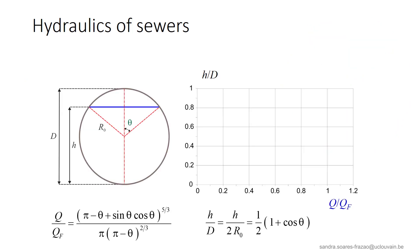We will therefore use a non-dimensional representation of this h-Q relation by representing the ratio Q over Qf as a function of the ratio h over D. Both ratios are a function of theta, so the relationship between h over D and Q over Qf may be constructed from values of theta corresponding to different fillings of the pipe. This is the blue curve illustrated here.